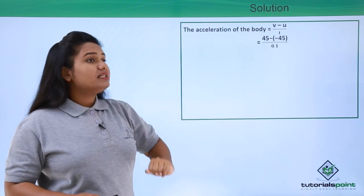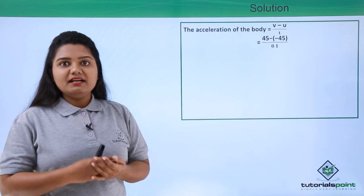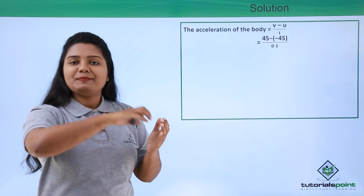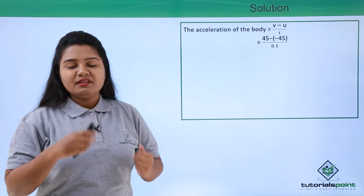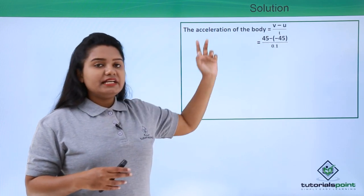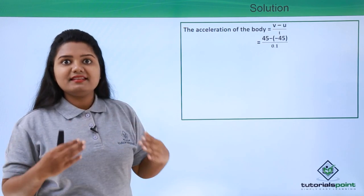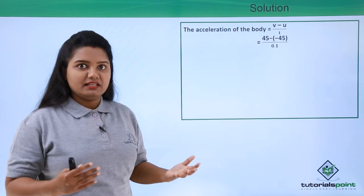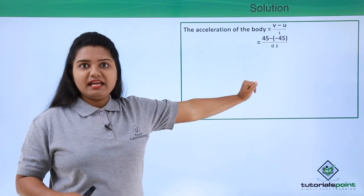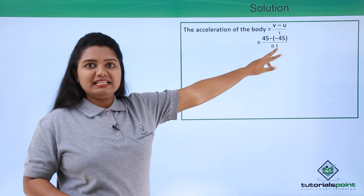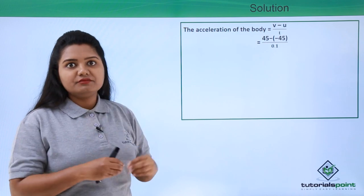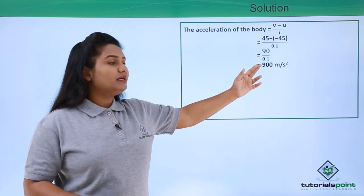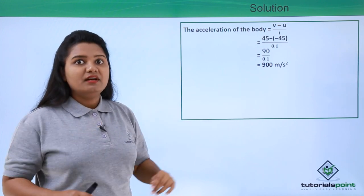The initial and final speeds are both 45 m/s, but their directions are opposite — the ball strikes the racket in one direction and returns in the opposite direction. So one velocity must be taken as negative. Here we take the initial velocity as negative, giving: a = (45 − (−45)) / 0.1 = 90 / 0.1 = 900 meters per second squared. This is the acceleration imparted to the ball by the tennis racket.